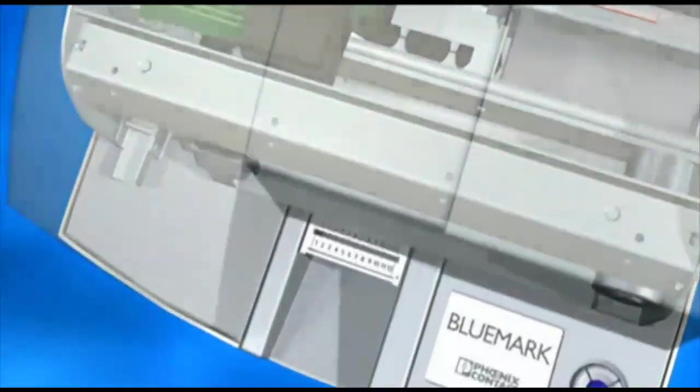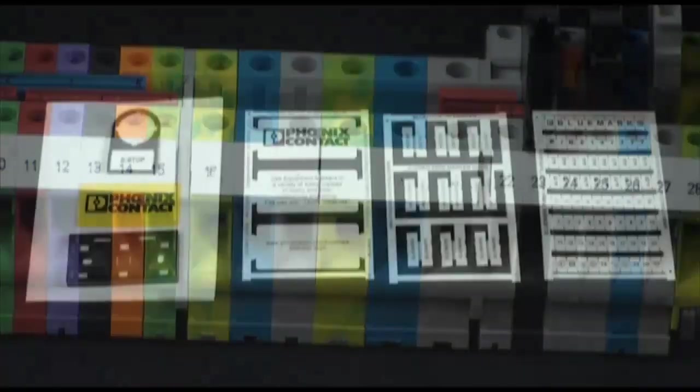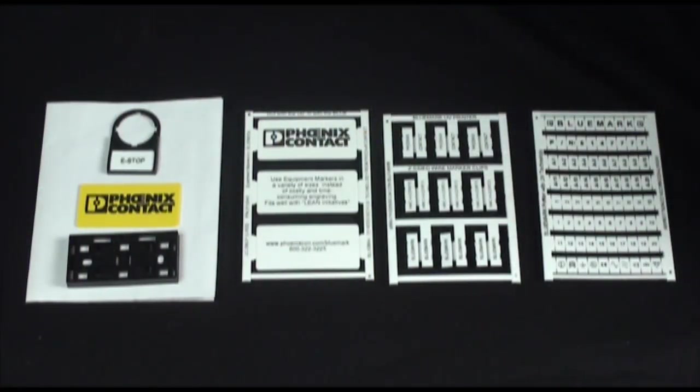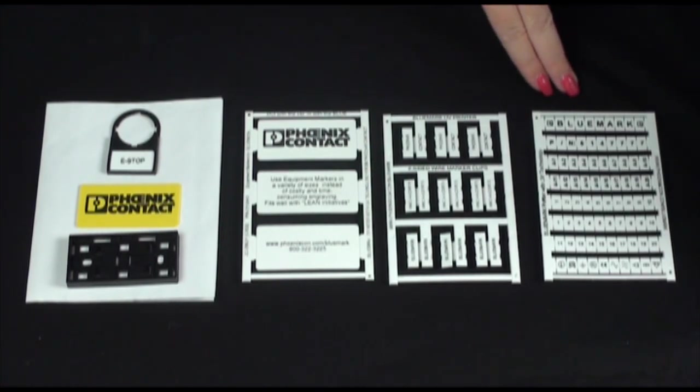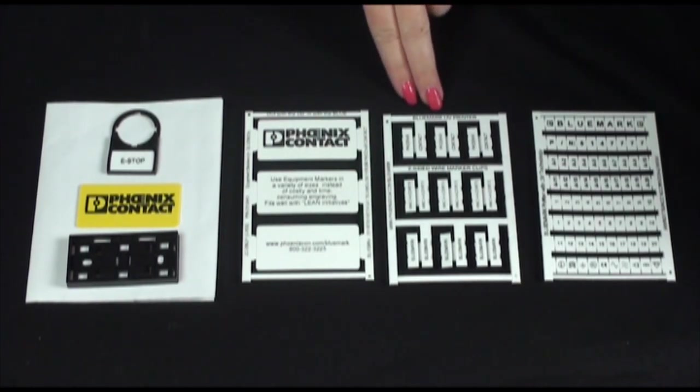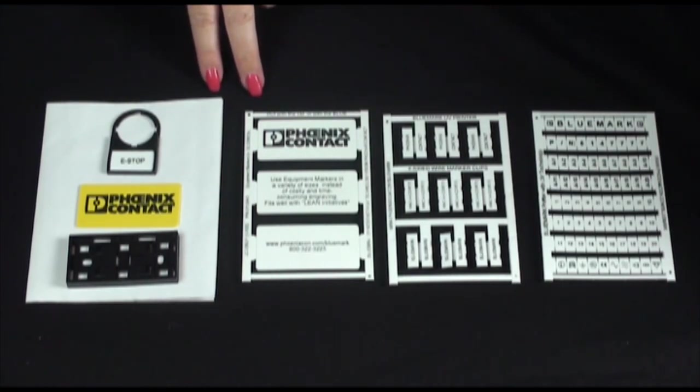The Bluemark prints on these plastic cards, called Unicards, from Phoenix Contact. They come in a variety of sizes and types, including terminal block marker cards, two-sided wire clip cards, and a couple of different styles of equipment labels.